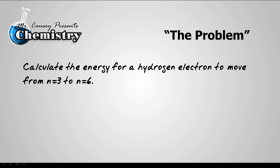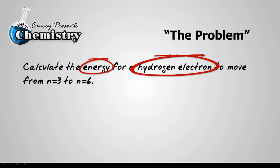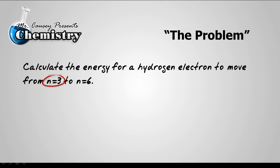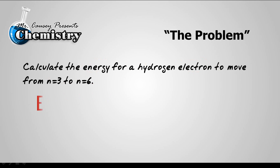What we're asking for is the energy of a hydrogen electron as it goes from the third energy level to the sixth energy level. And that tells me that we're going to have a photon that is absorbed. We can calculate that by remembering that the energy of a photon is going to be the change in the two energy levels.